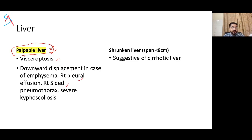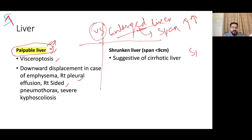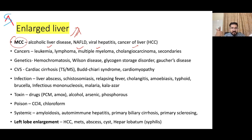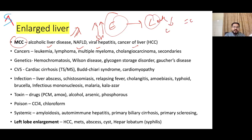Conditions where the liver is palpable but not pathologically enlarged include visceroptosis, downward displacement in emphysema, right pleural effusion, right-sided pneumothorax, or severe kyphoscoliosis. Liver span is shrunken in cirrhosis. The most common causes of liver enlargement are alcoholic liver disease, NAFLD, viral hepatitis, and cancers. In early-stage cirrhosis the liver may be palpable, firm, tender, and nodular; in late-stage cirrhosis, the liver span reduces.